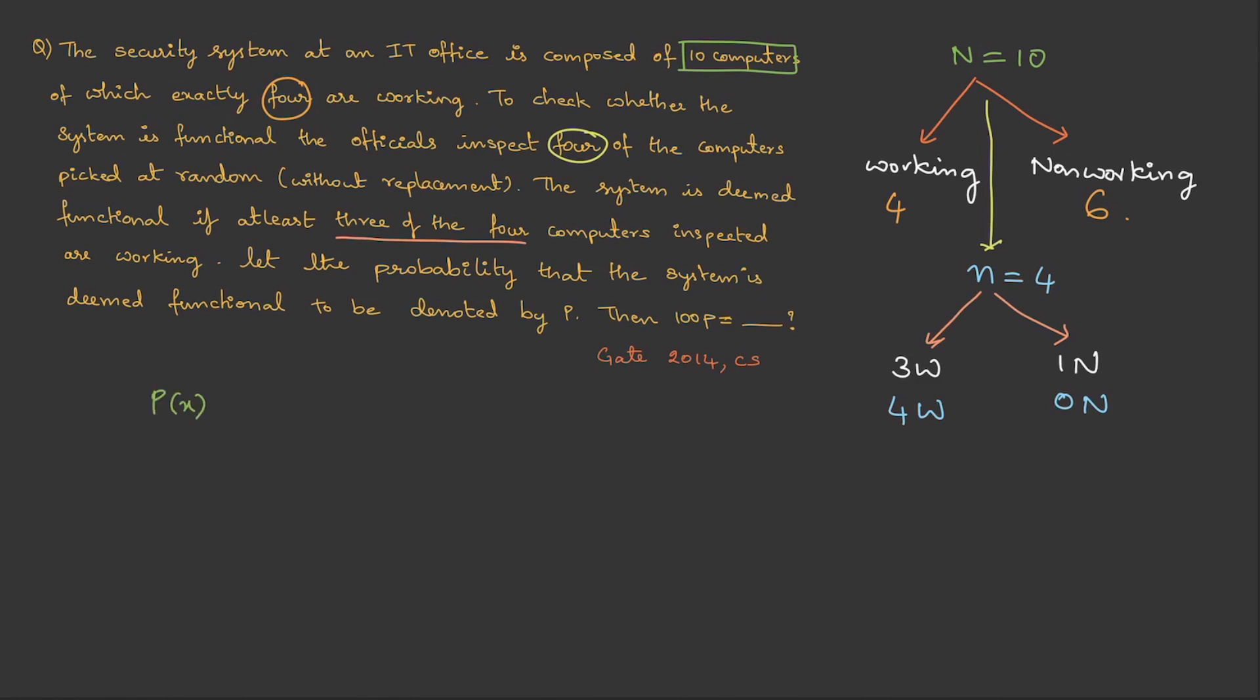Now, let us write the formula. Probability is, let me take this particular case. So, out of 4, 3 are working. Therefore, I can write 4 C 3 into out of 6, 1 is non-working, so 6 C 1 divided by from 10 we have chosen 4, so 10 C 4. Or the second case is out of 4, we have taken all the 4 to be working, so 4 C 4. Then, out of 6, 0 are non-working, so 6 C 0 divided by out of 10 we have taken 4, so 10 C 4. So, when you solve this, this turns out to be 0.1190.